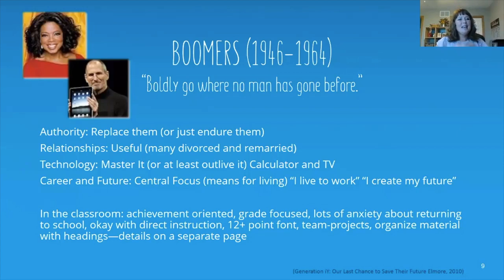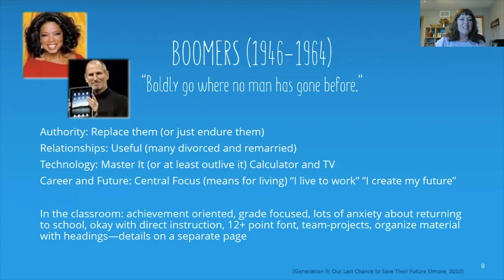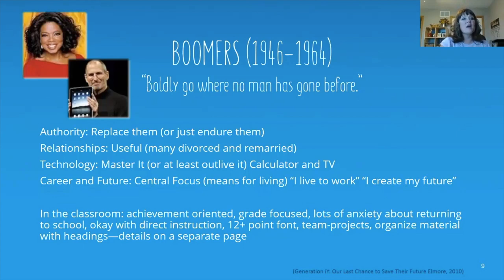The book breaks down different generations in the classroom and what we need to do as educators and mentors. When Baby Boomers are in our classroom, they might have a little mistrust of authority — but a respectful mistrust. These students won't directly challenge a grade; they will simply endure authority. Relationships for them are very utilitarian — they seek to build relationships with faculty members because they understand their useful purpose.